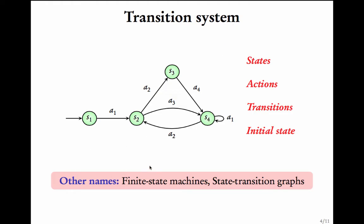Let me repeat. There are four components to a transition system. States. In this transition system, there are states S1, S2, S3, S4. Actions. Here the actions are a1, a2, a3, a4.